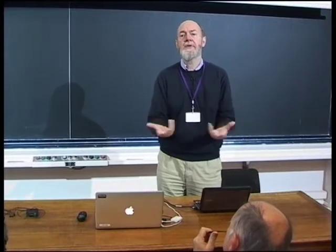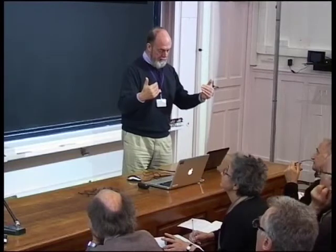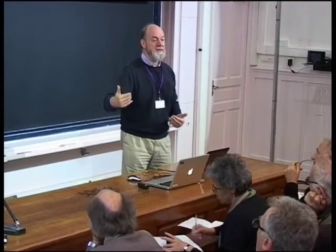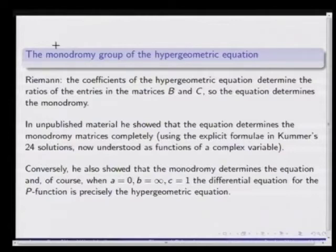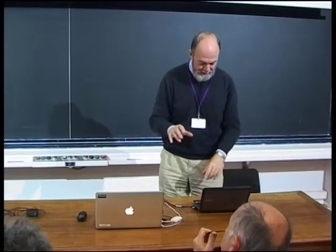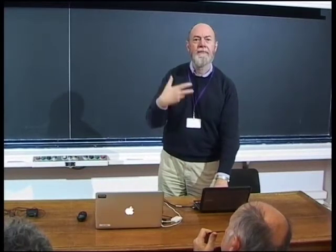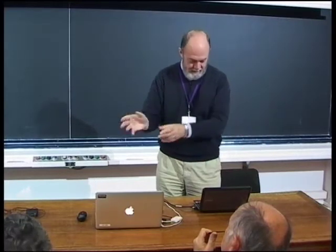If you allow certain simplifications — passing to a problem in which some of the exponents are zero — the monodromy determines the hypergeometric equation completely: there is only one equation with that monodromy. This will not be true if you have more singular points. So this is quite a profound study of branching behavior, monodromy, and differential equations.